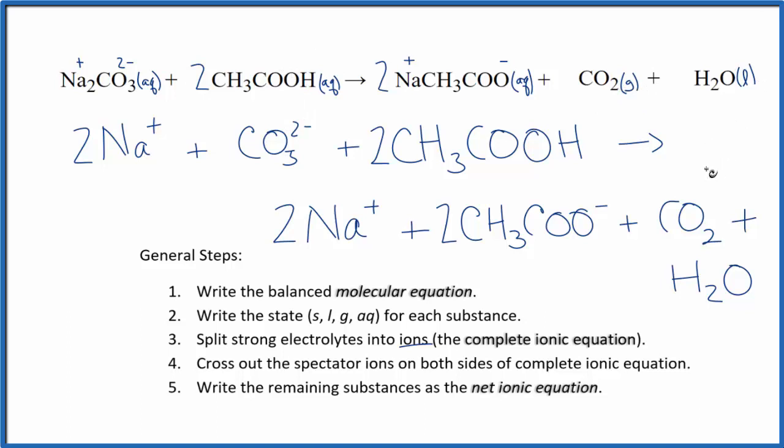Now we can cross out the spectator ions. These are things that are the same on both sides. So here on the reactants, I have 2 Na. In the products, I also have 2 Na. Cross them out. CO3 2-? Nope. CH3COOH? I don't have that. These two are very different. So pretty much, this is the net ionic equation. So let me clean it up. I'll remove these and I'll add the states in, and we'll see what that net ionic equation looks like.